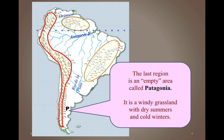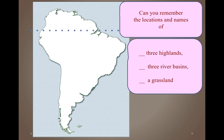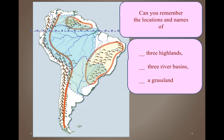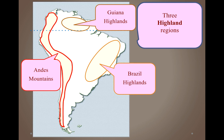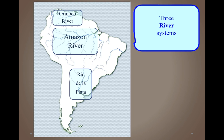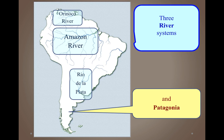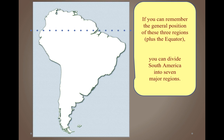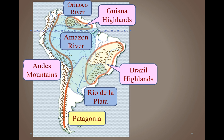The last region is Patagonia — an empty, windy grassland with dry summers and cold winters in the southern part of South America. Now let's review: the three highland regions are the Andes Mountains, the Brazil Highlands, and the Guiana Highlands. The three river systems are the Orinoco, the Amazon, and the Río de la Plata. Together with Patagonia, you now have the general makeup and regions of South America.